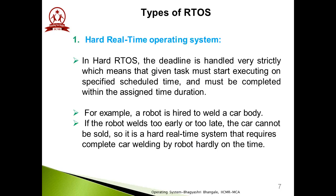First, what is a hard real-time operating system? In a hard RTOS, deadlines are handled very strictly — a given task must start execution at a specific scheduled time and must be completed within an assigned time duration. Hard real-time systems ensure that any event or process with a deadline completes within its assigned time duration. For example, a robot hired to weld a car body — if the robot welds too early or too late, the car cannot be sold, because it is a hard real-time system requiring the welding to be completed exactly on time.